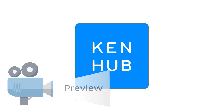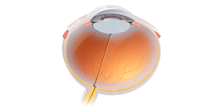Hello everyone, this is Juan from KenHub and welcome to another anatomy tutorial where this time we're going to be talking about the eyeball. What we're going to do on this tutorial is look at the image on screen. What we have here is a cut of the eye — we cut it in half and we're looking at a superior view of the eye.